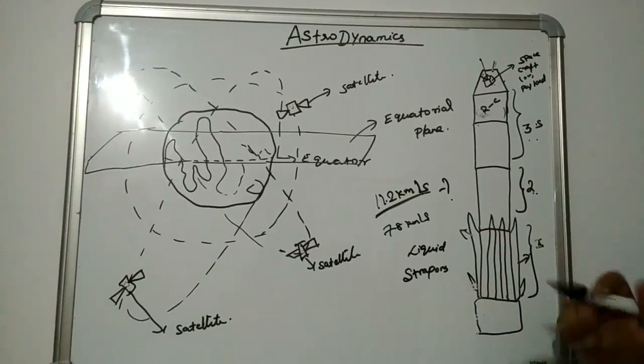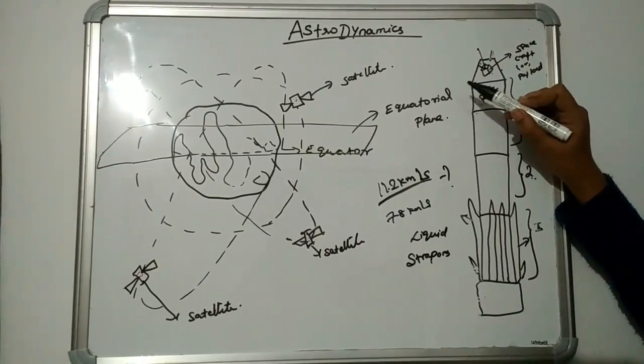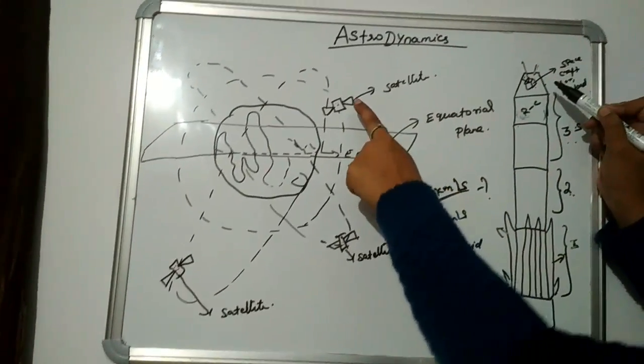After the satellite comes out, the solar panels and the antennas for communications open up and these satellites are placed in their orbit.